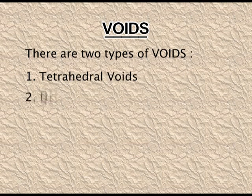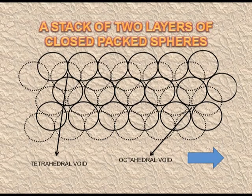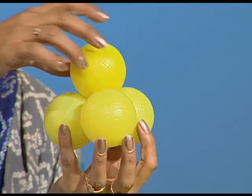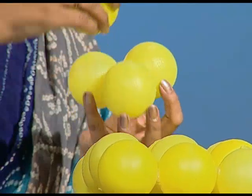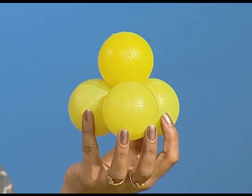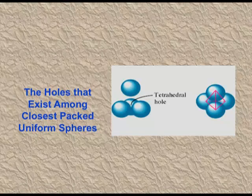The tetrahedral void is the vacant space, or unutilized space, enclosed between four touching spheres. These four atoms form the walls, and the empty space between them is called a tetrahedral void.